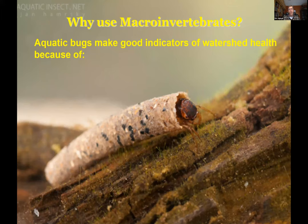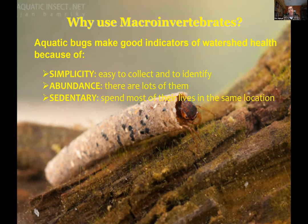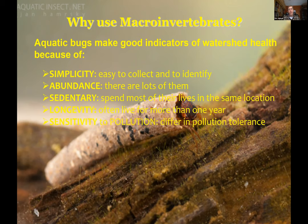We use macroinvertebrates for several reasons. They're relatively easy to collect and abundant — you'll find hundreds or thousands in a small area. They typically remain in one place for a long time, often more than a year. They also vary in their sensitivity to pollution: finding pollution-intolerant ones indicates lower pollution, while finding only tolerant ones suggests more pollution.